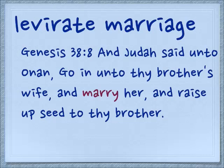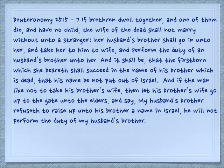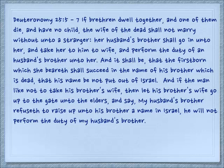The levirate marriage is laid out more specifically in Deuteronomy 25 starting in verse 5: 'If brethren dwell together, and one of them die, and have no child, the wife of the dead shall not marry outside unto a stranger. Her husband's brother shall go in unto her, and take her to him to wife, and perform the duty of a husband's brother unto her. And it shall be that the firstborn which she bears shall succeed in the name of his brother which is dead, that his name shall not be put out of Israel. But if the man likes not to take his brother's wife, then let his brother's wife go up to the gate unto the elders, and say, My husband's brother refuses to raise up unto his brother a name in Israel. He will not perform the duty of my husband's brother.'